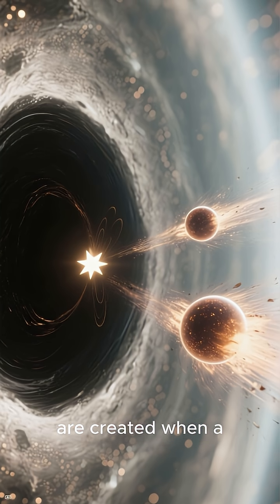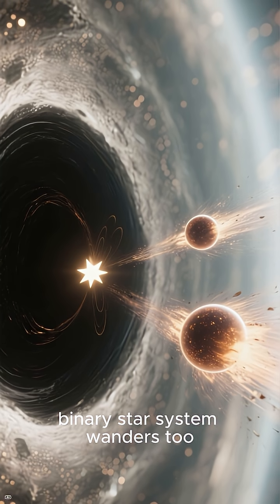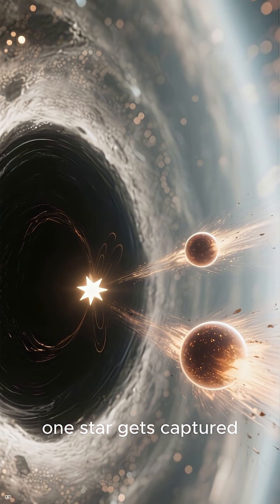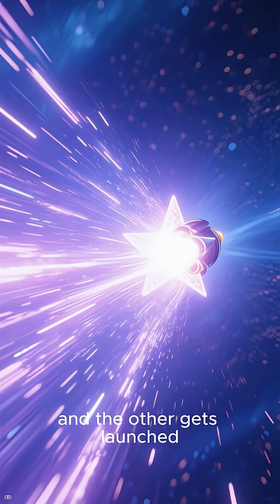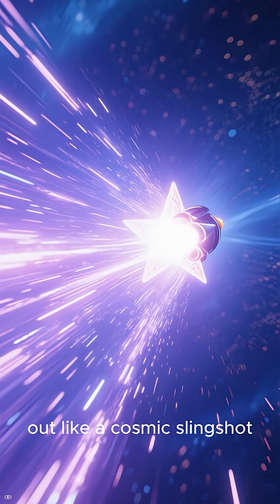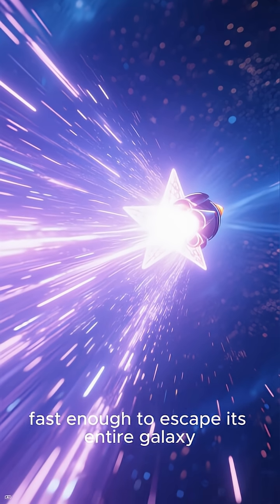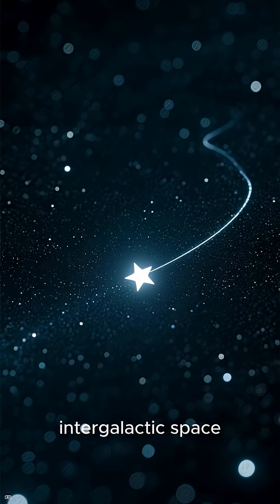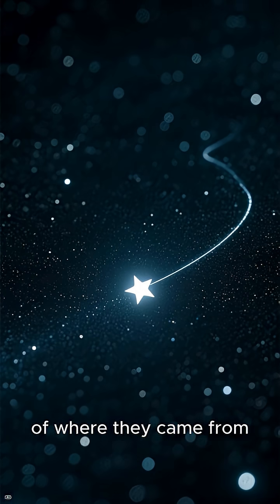Hypervelocity stars are created when a binary star system wanders too close to a supermassive black hole. One star gets captured, and the other gets launched out like a cosmic slingshot, fast enough to escape its entire galaxy. These stars then drift alone through intergalactic space, carrying a record of where they came from.